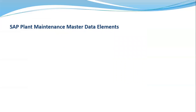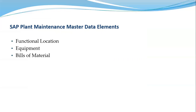We have some master data elements in SAP Plant Maintenance. These include functional location, equipment, and bills of materials. Master data in SAP refers to data relating to an individual object which remains unchanged over an extended period of time. The functional location is an organizational unit within logistics that structures the maintenance objects of the company according to functional, process-related, or spatial criteria. A functional location represents the place at which a maintenance task is to be performed.